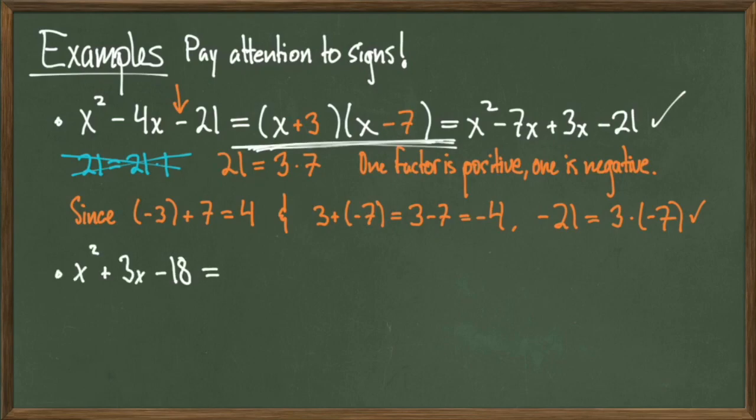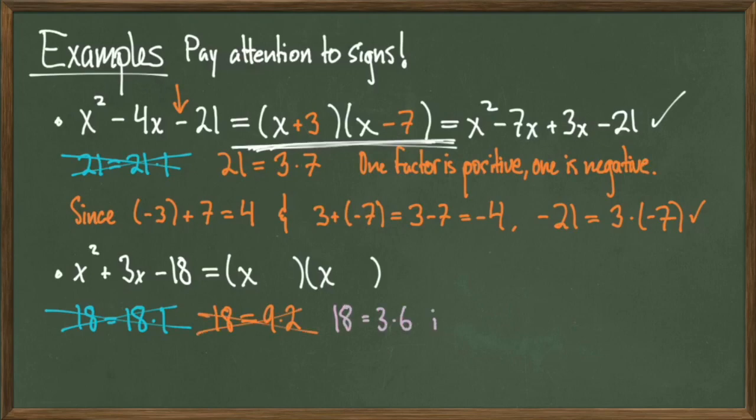For our next example, consider the polynomial x squared plus 3x minus 18. So just like before, I'm going to play with different factors of 18 and see which ones sum up to 3. For starters, I know that 18 times 1 isn't going to get me anywhere near 3, so I can cross that one out. I can also look at 18 equals 9 times 2, but that doesn't seem to get me close to 3 either, so I'll cross it out. However, 18 equals 6 times 3 is definitely worth a try.